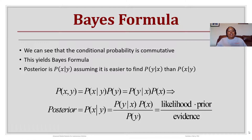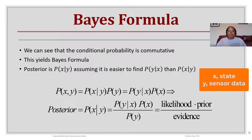Bayes' formula states that conditional probability is commutative. The posterior is the probability of X given Y, where we assume it's easier to find the probability of Y given X than X given Y. Using the joint probability — P(X,Y) = P(X|Y)·P(Y) = P(Y|X)·P(X) — we can derive the posterior P(X|Y) as the likelihood P(Y|X) times the prior P(X), divided by the evidence P(Y).